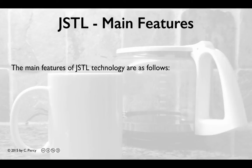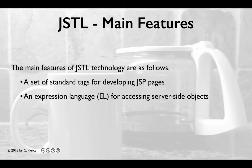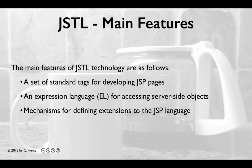The main features of JSTL technology are as follows: a set of standard tags for developing JSP pages, an expression language for accessing server-side objects, and mechanisms for defining extensions to the JSP language.